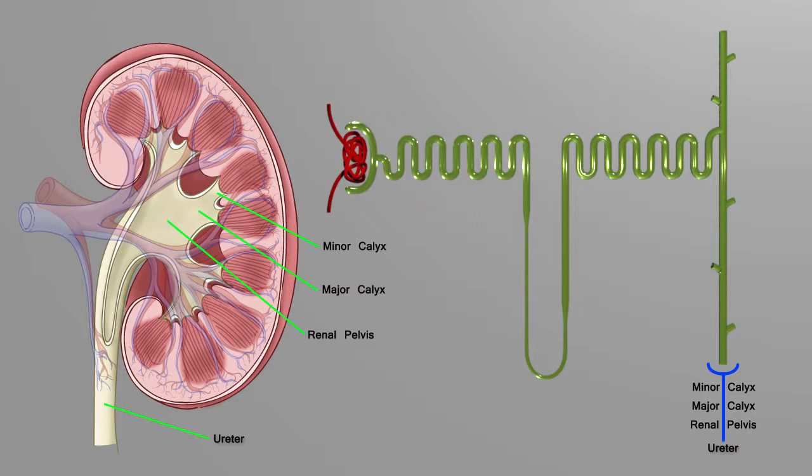Both of those ureters will unite and drain into the urinary bladder. The urinary bladder is expansible, so it has rugae just like the stomach, and it can expand based on the volume that it contains.